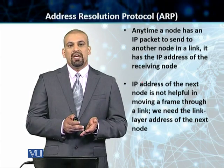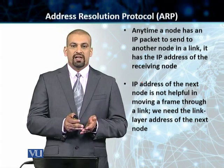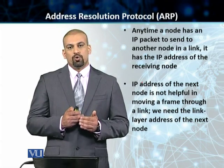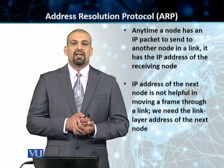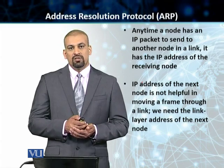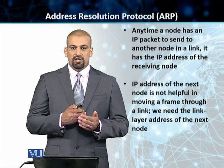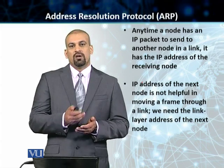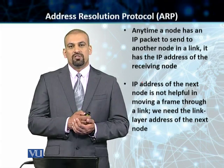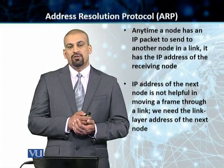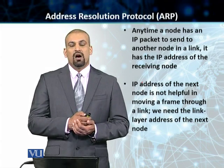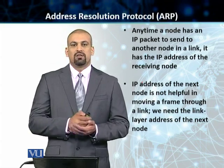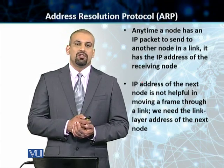Once system A gets to know the link layer address of the destination, which is system B, it stores that link layer address in its cache. Therefore, all future transmissions from system A to system B are unicast — they are always going to be unicast.